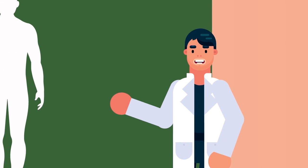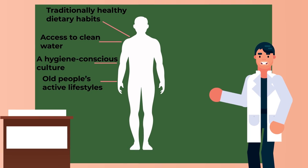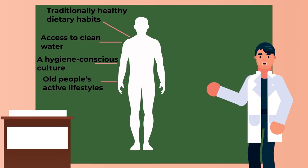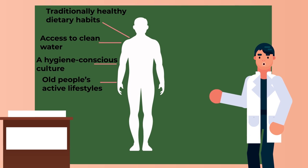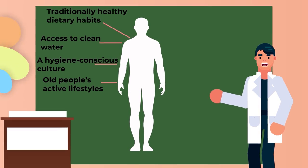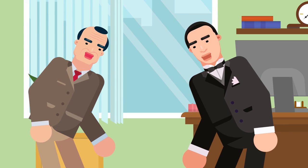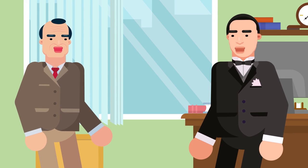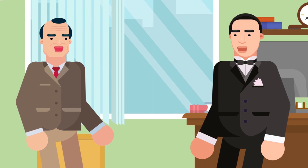Several factors have combined to improve health among the Japanese population. Traditionally healthy dietary habits, access to clean water, a hygiene-conscious culture, and old people's active lifestyles. Other possible explanations include genetics, a low level of income inequality, and a high level of social cohesion.